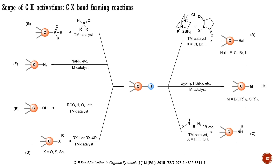The main carbon-heteroatom bond-forming reactions are shown here. Using CH activation, it is possible to introduce halogens, organometallic functionalities, amino groups, chalcogens, hydroxy, azido, and phosphoryl groups. Each of these transformations deserves a separate lecture. In what follows, I will present several examples describing some of these CH functionalizations.